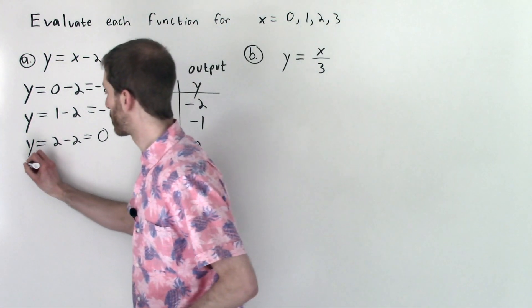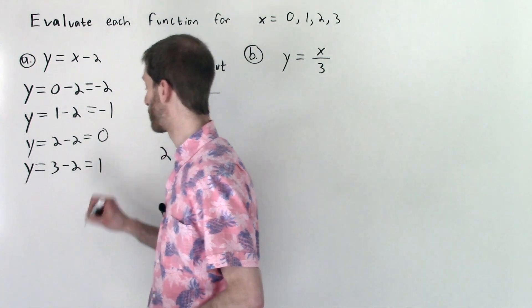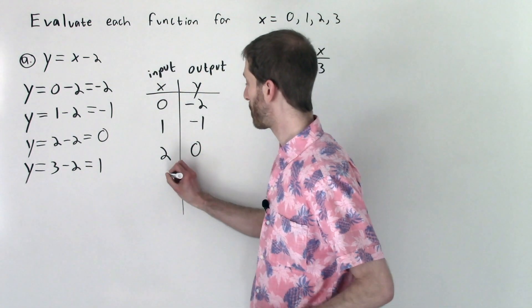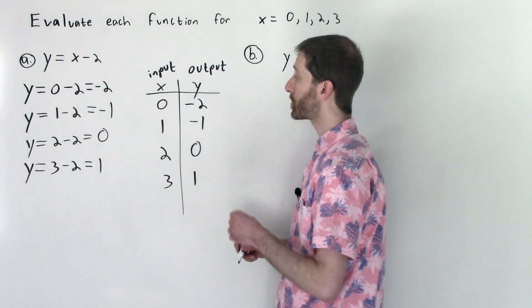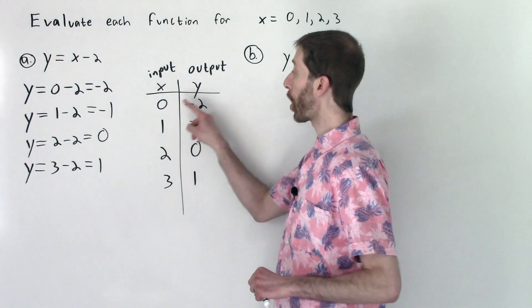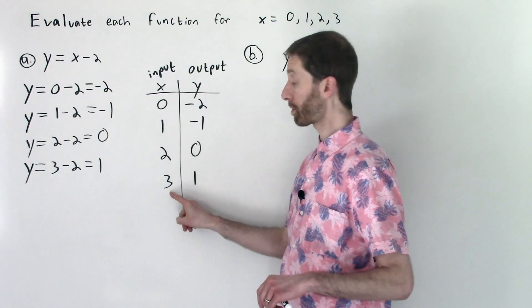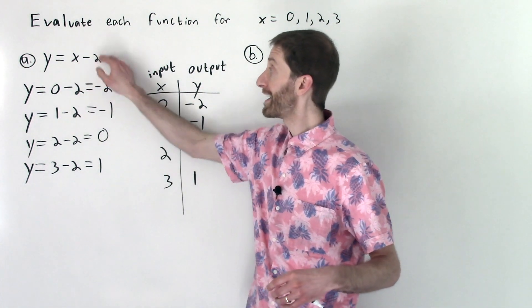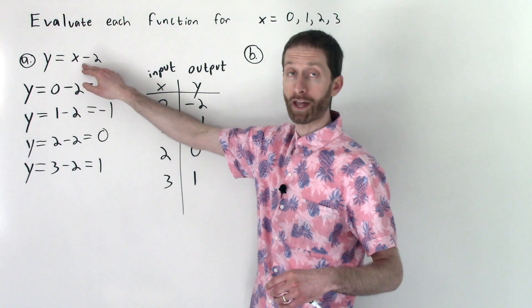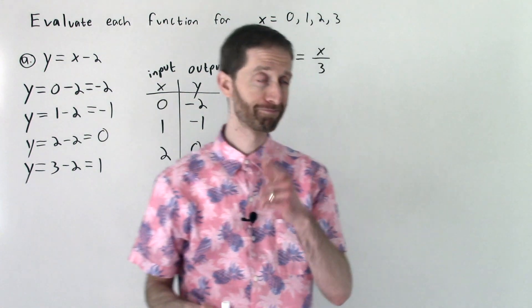Last but certainly not least, y equals, our input is 3 minus 2 is 1. 3 minus 2 is 1, so our input 3, output 1. And there you have it, folks. Again, note that for every input, there's only one output value that these numbers go to. So the number 3 goes only to 1. That's it. There's no other number that when I plug 3 into this function rule that I would expect to get out, aside from 1, making it a function. Good stuff.